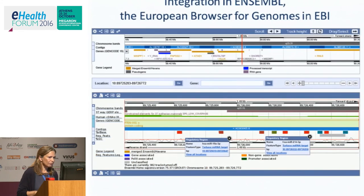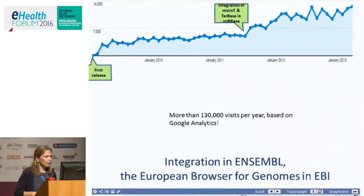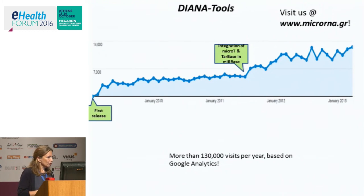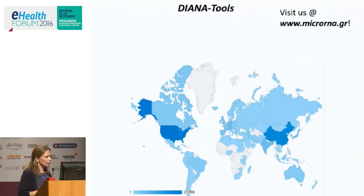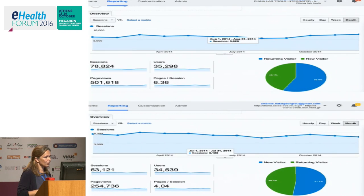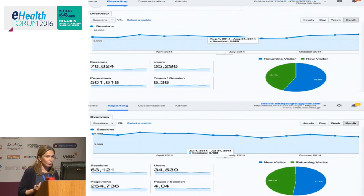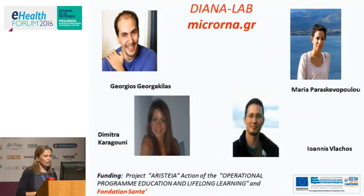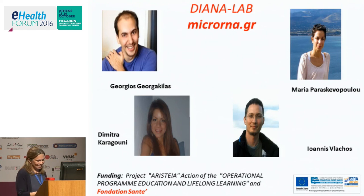Just to finish — our work is integrated in Ensembl, the European browser for Genome API, and we have many users. Starting in Greece from 2009, we are moving up and currently have more than 100,000 users per year and more than 10,000 users per month on our website with different programs. This is the real people behind the work — thank you very much for your time.